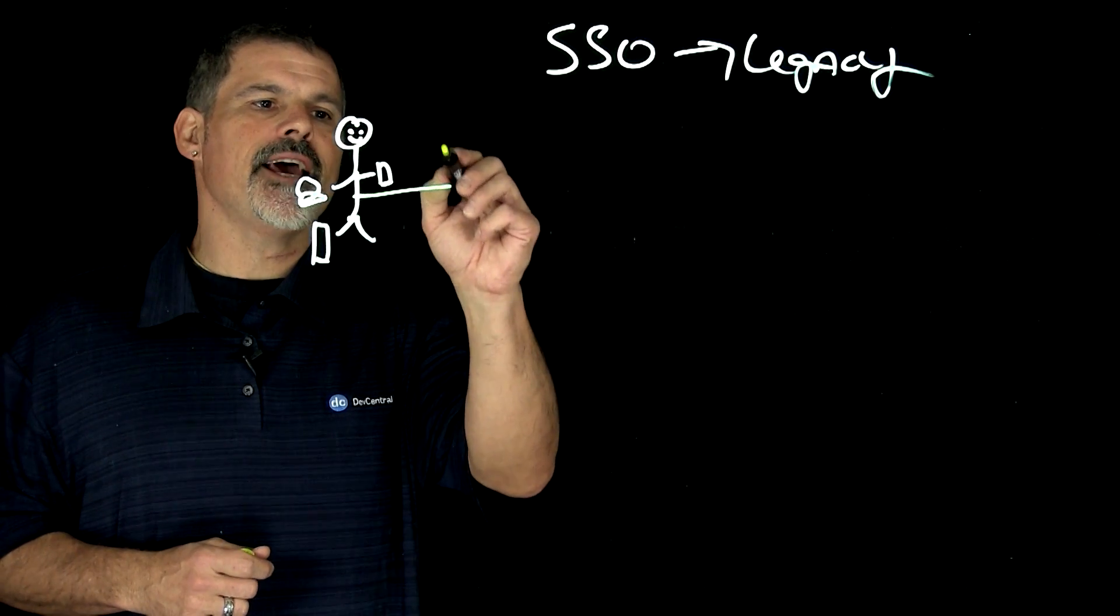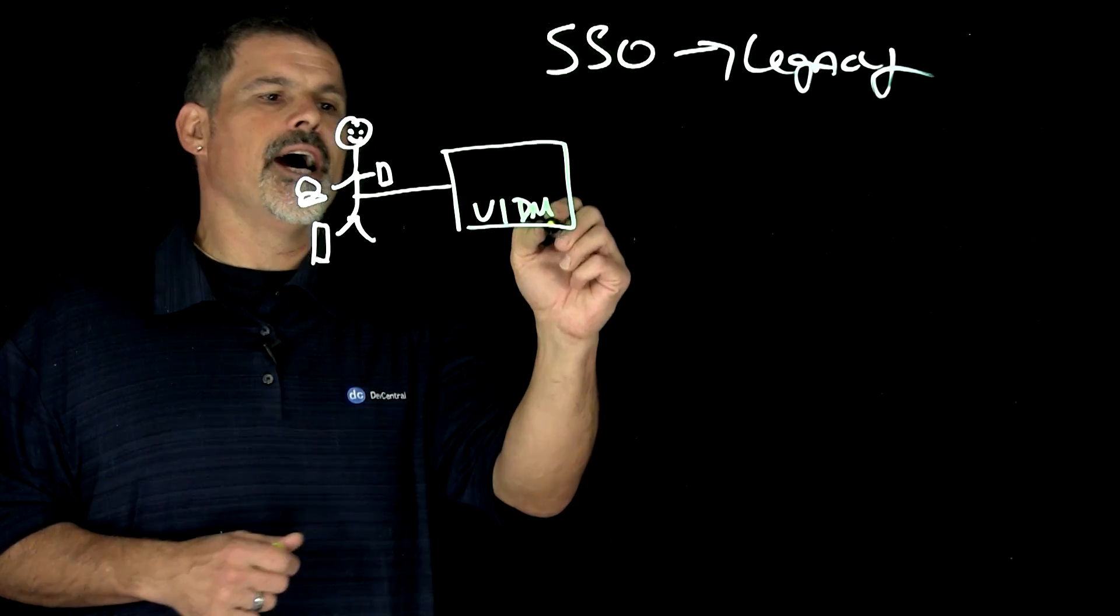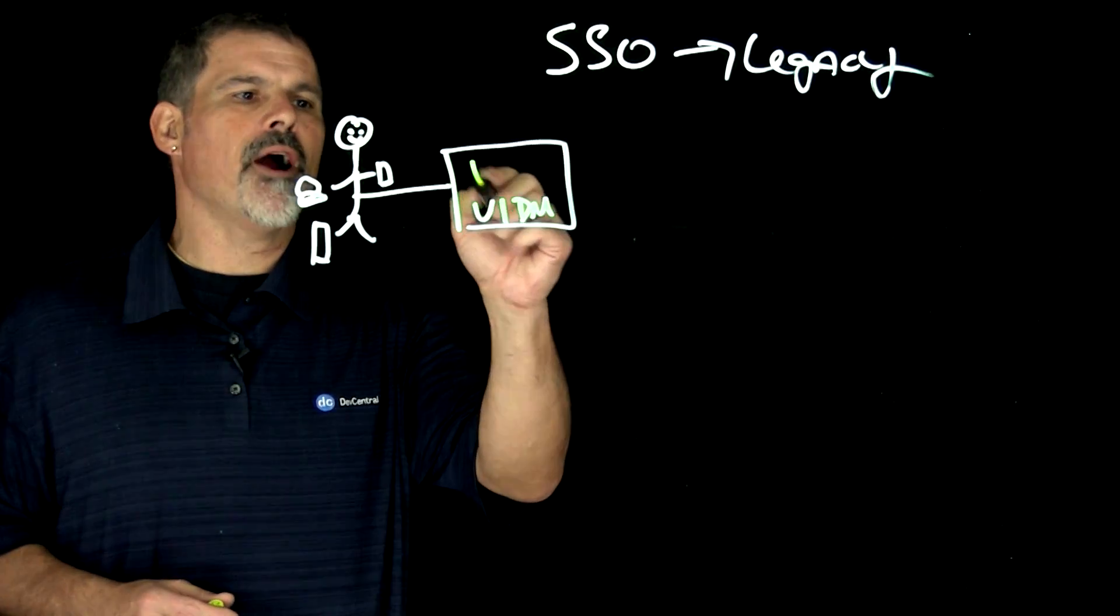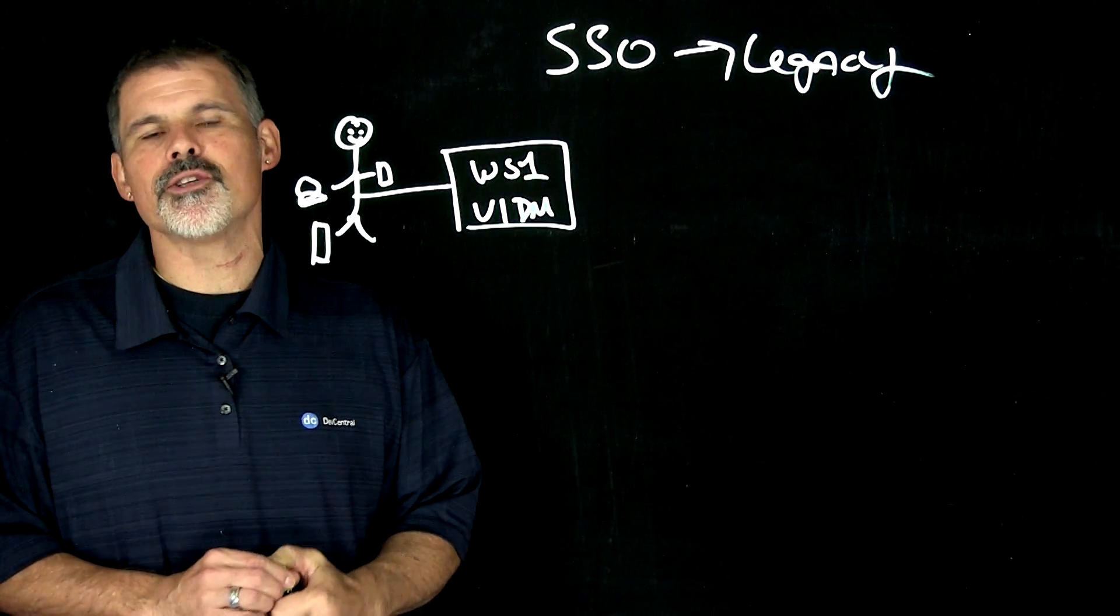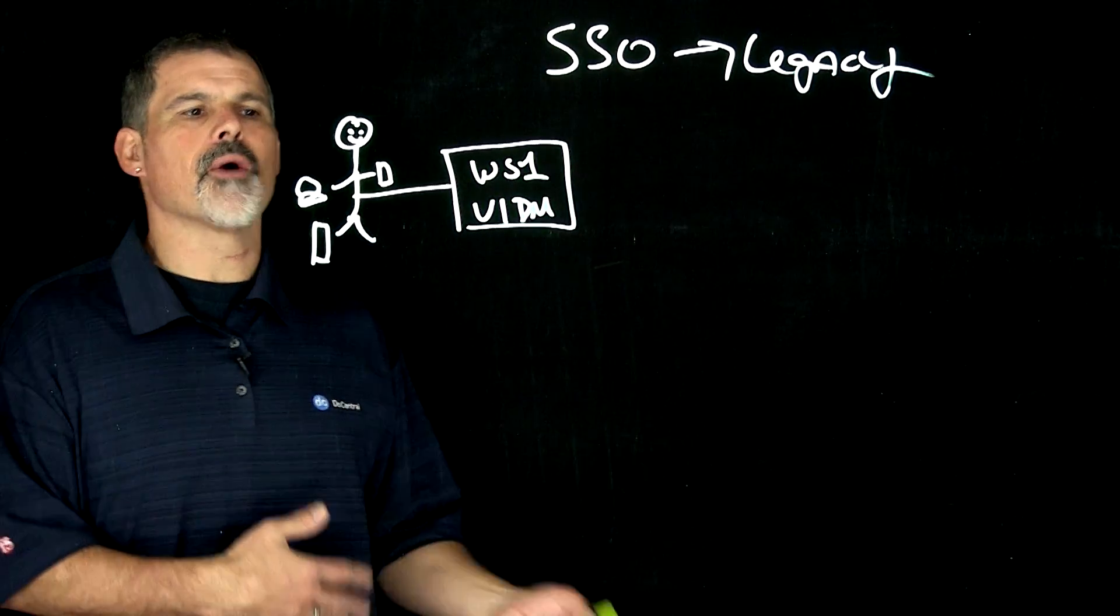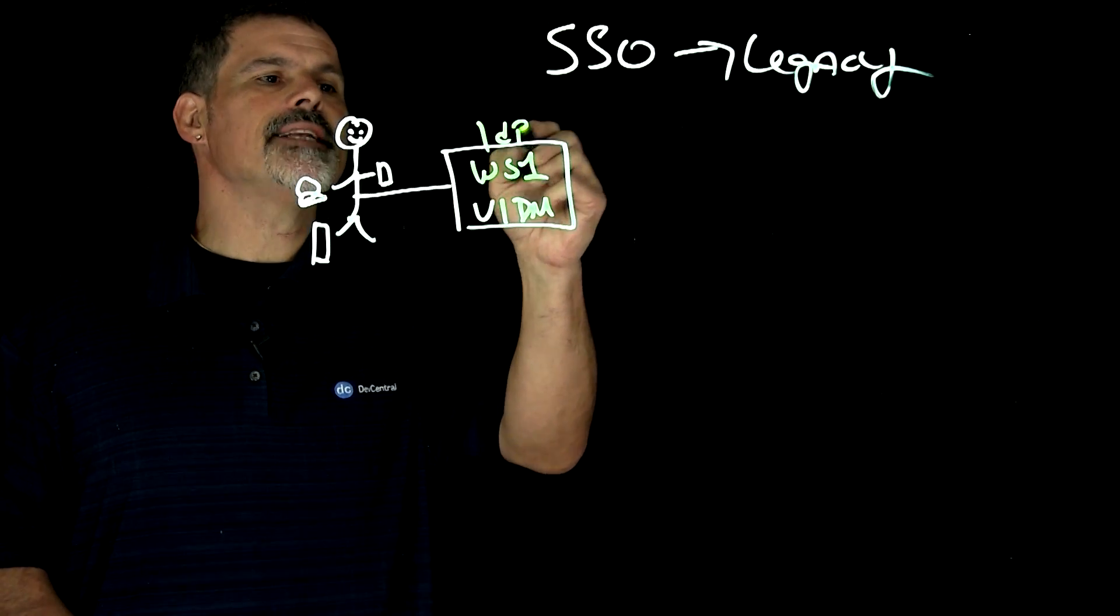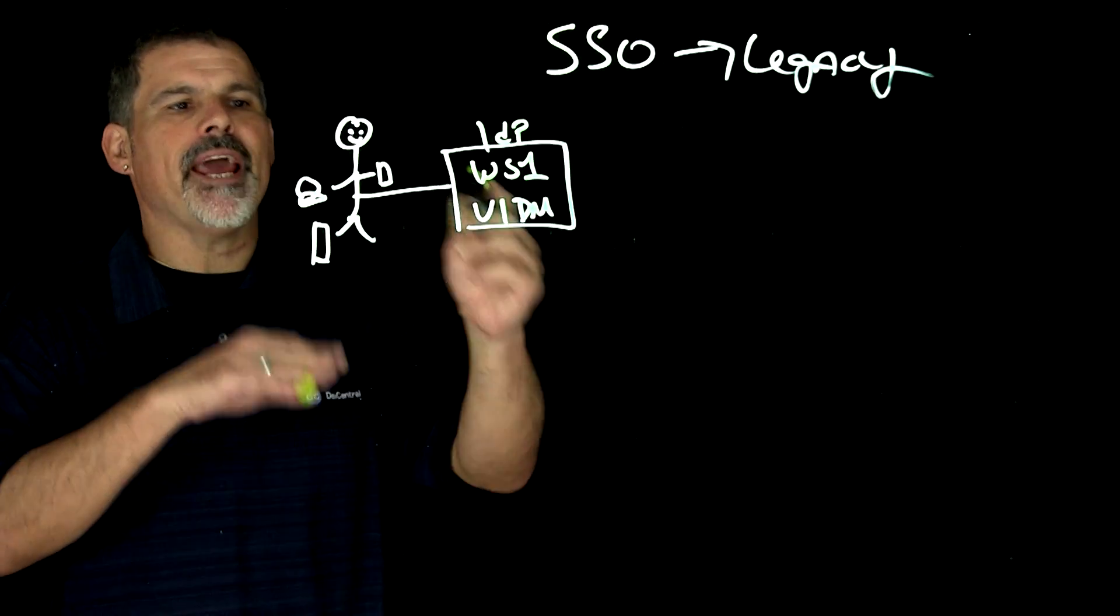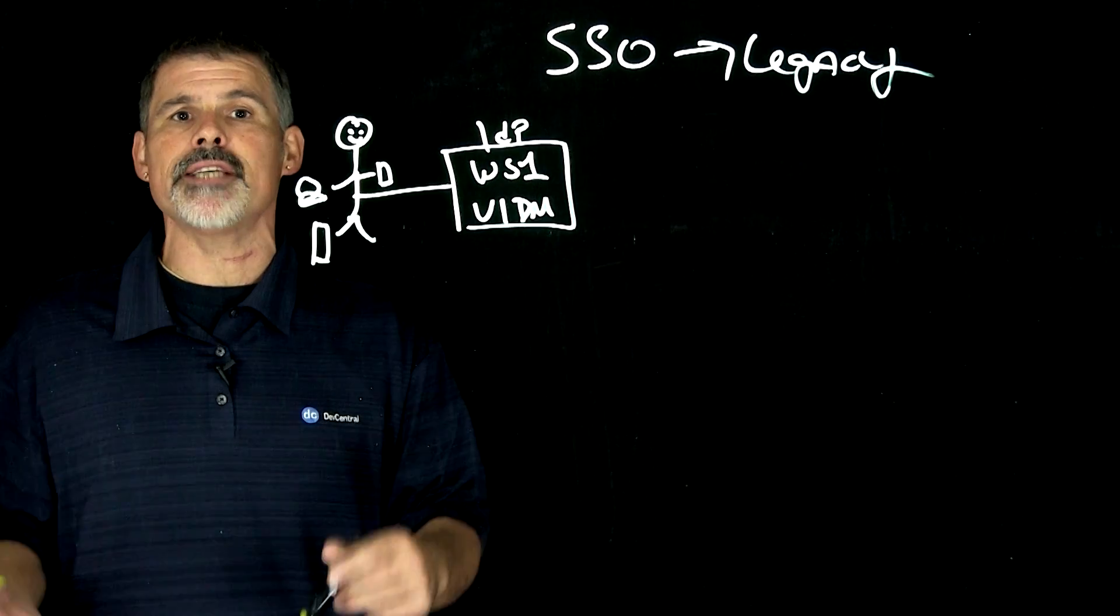So they would hit their VIDM, which is essentially VMware's Identity Manager, and it's part of the Workspace ONE suite. Now, Workspace ONE includes things like AirWatch and Horizon View, and it's considered an IDP, an identity provider.